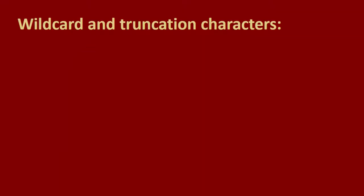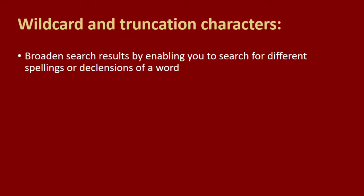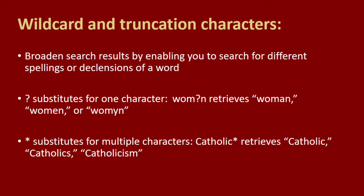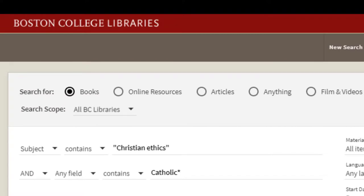Wildcard and truncation characters can help you broaden your search results by enabling you to search for different spellings or declensions of a word without having to enter each variation. The question mark can be used to substitute for one character to perform a wildcard search, and the asterisk can be used to substitute for multiple characters. Please also note that when you want to search more than one term as a phrase, it's best to enclose the words in double quotation marks.